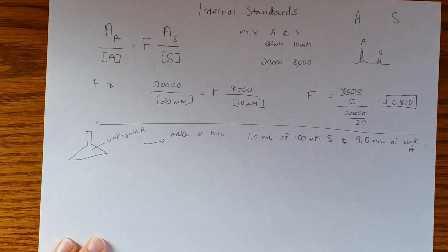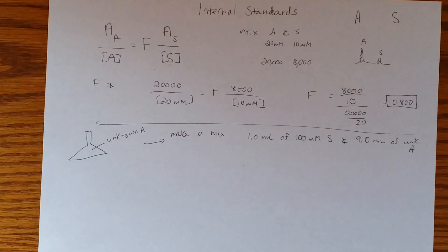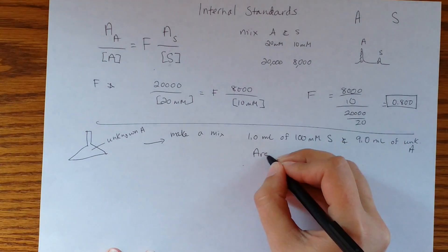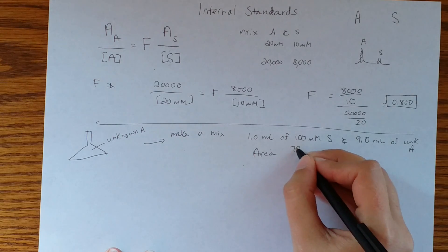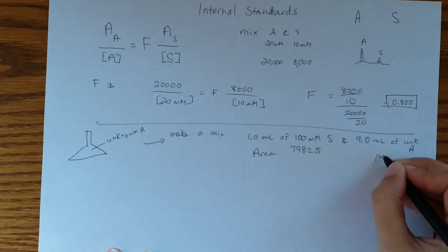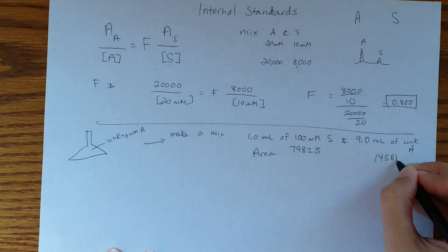Because it's unknown we really can't do anything about that, but what we can do is we can go ahead, we can measure them, we can do chromatography again, we can get the areas, we can come up with new numbers for areas. Let's say we do that and we got area of, how about 79.82 for S, and let's say that the area for analyte is 14.581.